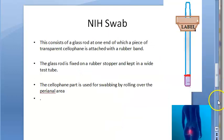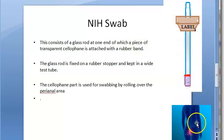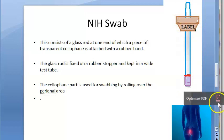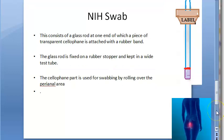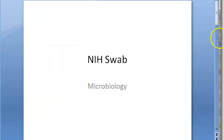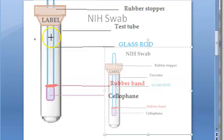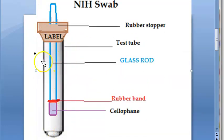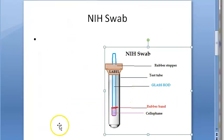To summarize: NIH swab is the National Institute of Health USA swab. It contains a glass rod, one end of which has cellophane with a rubber band, and the other side has a stopper. You roll the cellophane part over the perianal area, collect the swab, keep it in the test tube, send it to the lab, and the lab extracts the cellophane and examines it under the microscope. Practice drawing this diagram: a test tube, inside it a glass rod with cellophane and rubber band on one end and a rubber stopper on the other.